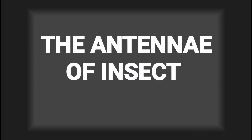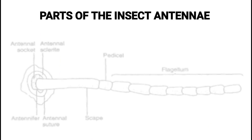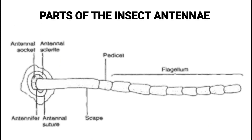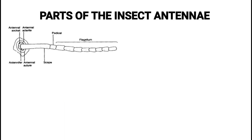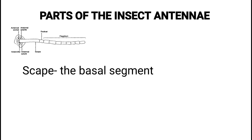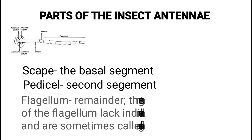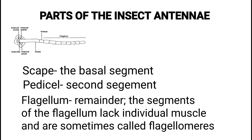The Antennae of Insects: Parts of the Insect Antennae. Scape — the basal segment. Pedicell — the second segment. Flagellum — the remainder. The segments of the flagellum lack individual muscles, and are sometimes called flagellomeres.